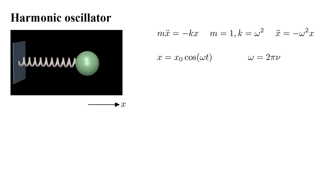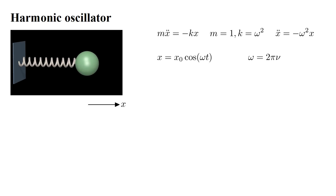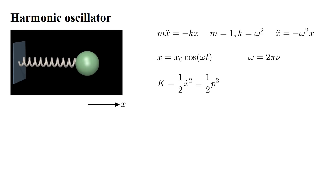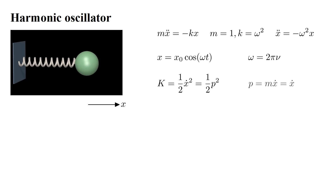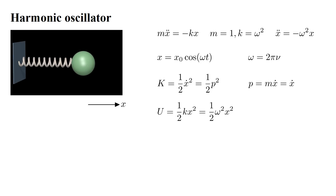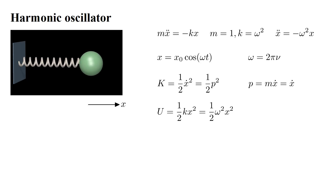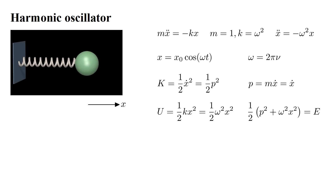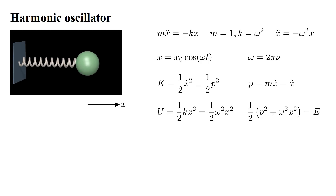Omega is proportional to the oscillation frequency nu. Stiffer springs have larger values of k and omega, and oscillate at higher frequencies. The kinetic energy is one-half mass times velocity squared. The mass is one, and the velocity is denoted by x-dot. This equals one-half p squared, where p is the momentum, mass times velocity. The potential energy stored in the spring stretched to length x is one-half k x squared, which is also one-half omega squared x squared. So one-half times the quantity p squared plus omega squared x squared equals the total energy of the mass-spring system.